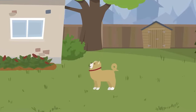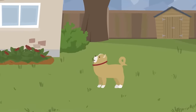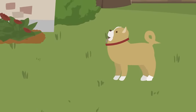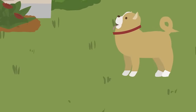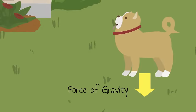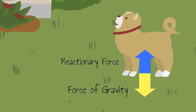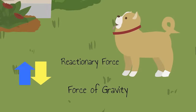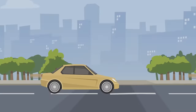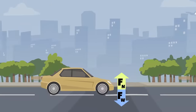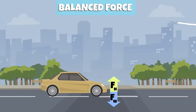An example of a pair of balanced forces is gravity and reactionary force. When a dog stands up on all its legs, the force of gravity of the earth and the reactionary force of the dog's legs cancel each other out. A stationary car is another example — if the car is not moving, it means that there is a balanced force acting upon it.